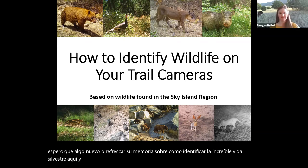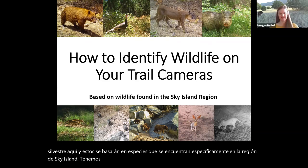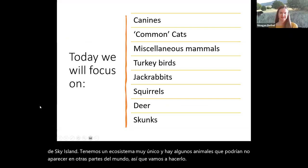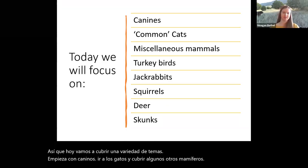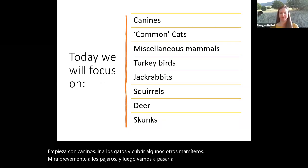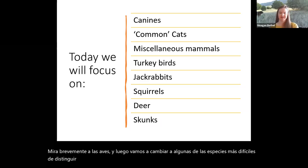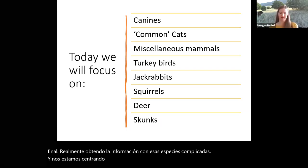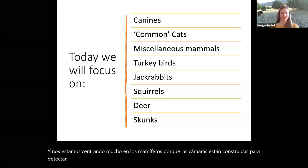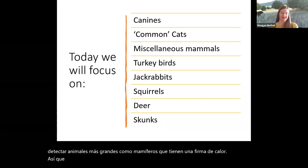These species are going to be based on those found specifically in the Sky Island region. We have a very unique ecosystem, and there are some animals that might not appear elsewhere in the world. Today we're going to cover a variety of topics: canines, cats, and other mammals. We'll look briefly at birds, and then shift into some of the harder species that are hard to tell apart, like jackrabbits, squirrels, deer, and skunks. We're focusing a lot on mammals because the cameras are built to detect larger animals that have a heat signature.